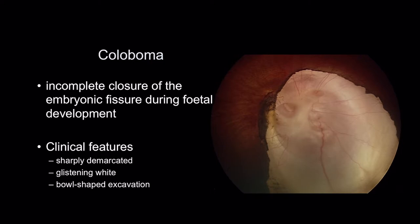Coloboma is where there's an incomplete closure of the embryonic fissure during fetal development. As in this case, you see a sharply demarcated glistening white area, like a bowl-shaped excavation.